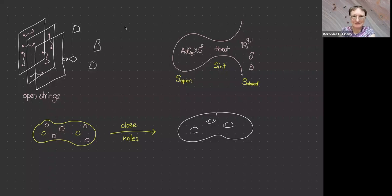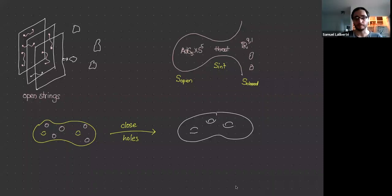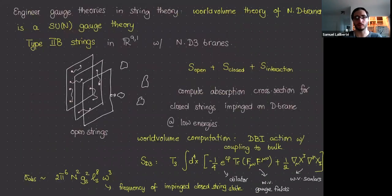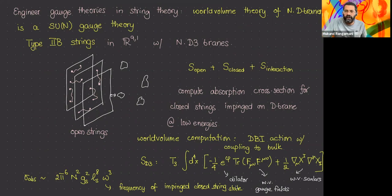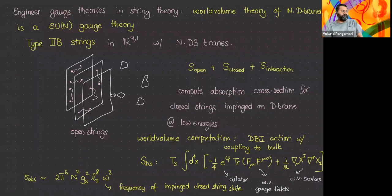Final question: The DBI absorption computation uses the fact that the dilaton couples through a classical vertex to two gauge components on the brane, and that vertex is then converted into an absorption cross-section calculation. It's just the dilaton and gauge fields — a standard classical vertex from the DBI plus coupling-to-bulk terms.